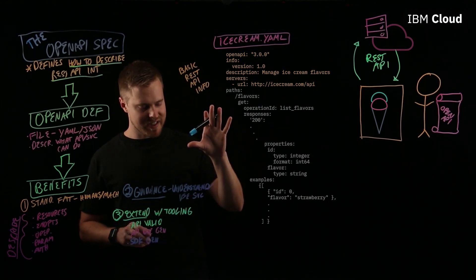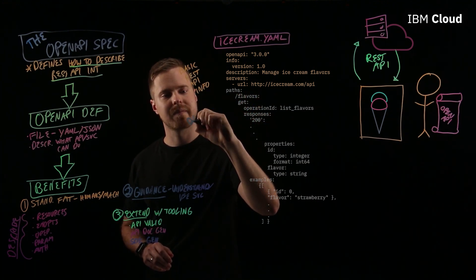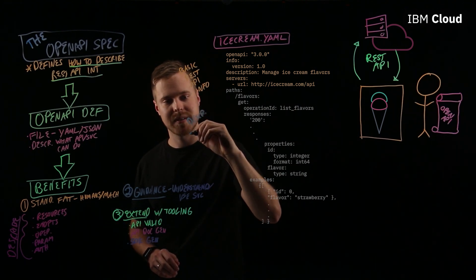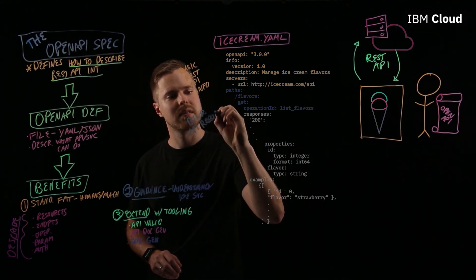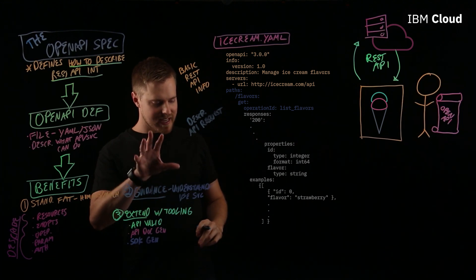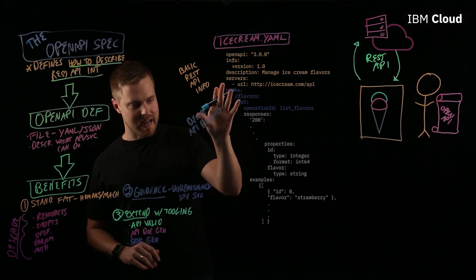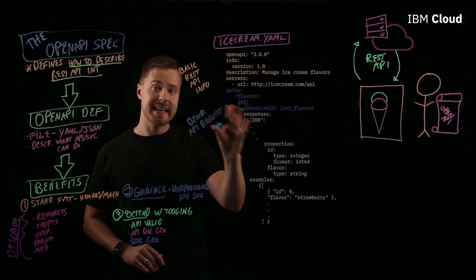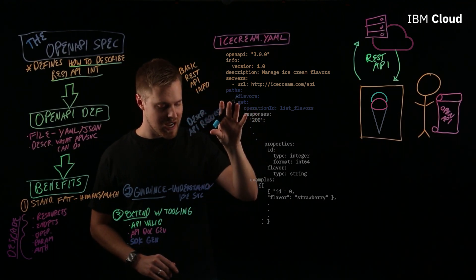Next, you might have a section to describe the REST API request. In this case, we're looking at the operation list flavors. You see a path there of slash flavors. You see the GET HTTP method that's outlined there for exactly how you form your request.